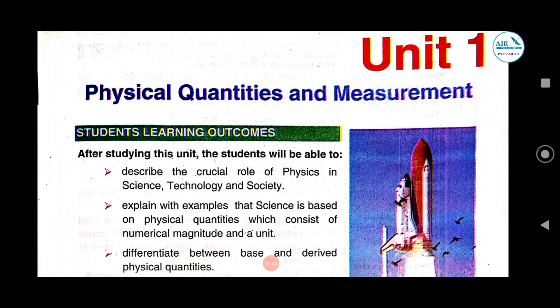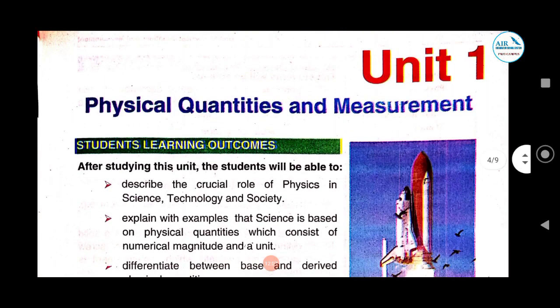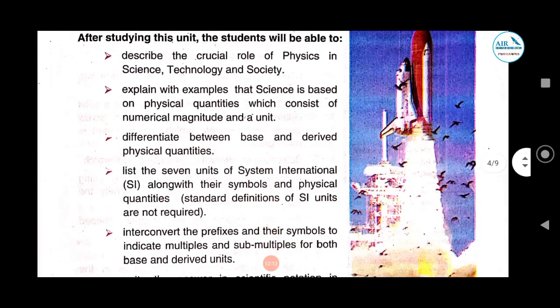Moving on to Unit 1 — the first unit is Physical Quantities and Measurements, as I already explained. In this unit, we will look at quantities. All measurable quantities are called physical quantities. Any thing that you can measure or count — we call that a physical quantity.